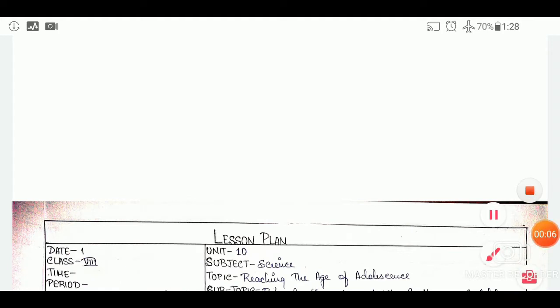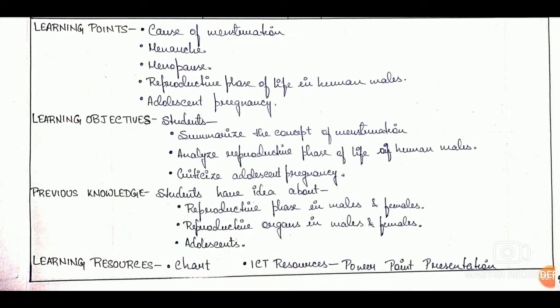The details include date, class, time, period, unit, subject, topic, and subtopic if necessary. Once that is done we move on to the learning points, and after learning points we have learning objectives. The keywords for the learning objectives are taken from Bloom's taxonomy. After that we have previous knowledge of the learners, and then we have learning resources. We have made a separate video explaining how to write learning points, learning objectives, and all these things.